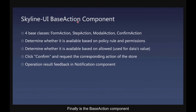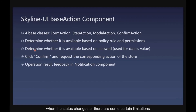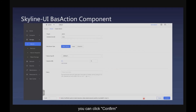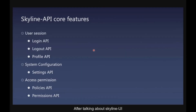Finally, the base action component has four base classes: form action, step action, modal action, and confirm action. Whether actions are allowed depends on policy rules and permissions. When the status changes or there are certain limitations, whether you can take action depends on the allowed property. For example, on the create volume page, you can click confirm and it will request the corresponding action of the store, where operation feedback will be returned in the notification box.